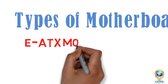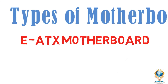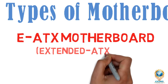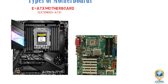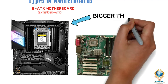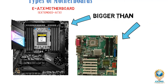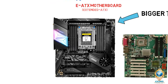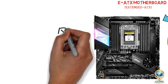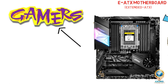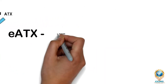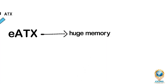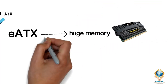Now we are going to see about the EATX motherboard. The EATX motherboard is an Extended ATX motherboard, and its size is enormous compared to a standard ATX motherboard — it is bigger than a normal motherboard. Despite its size, it has many features and uses. The EATX is primarily used for gaming, meaning this motherboard is most commonly used by gamers. This motherboard can be expanded to have a huge memory and can accommodate a powerful CPU with more cores.